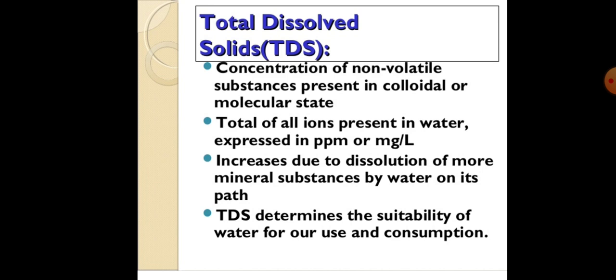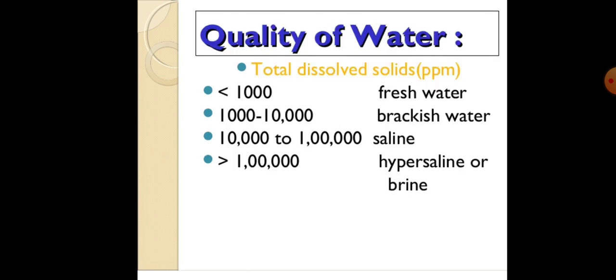Total dissolved solids — the ions present in water, the concentration of non-volatile substances in colloidal or molecular state — when ions are mixed or dissolved in water. Quality of water by total dissolved solids in ppm: less than 1000 is fresh water; 1000 to 10,000 is brackish water; 10,000 to 1 lakh is saline water; and greater than 1 lakh is hypersaline or brine water.